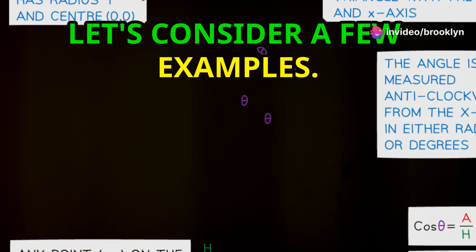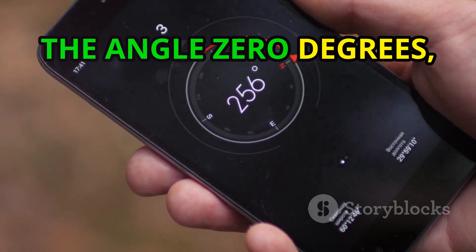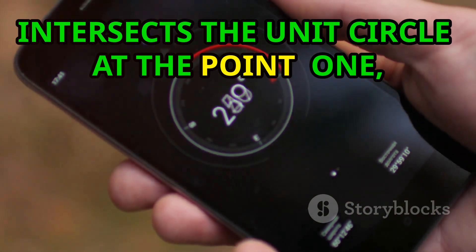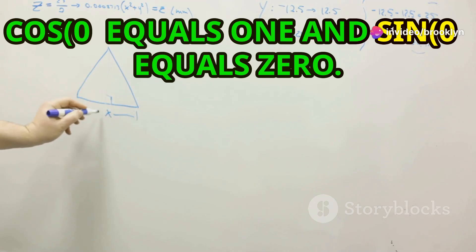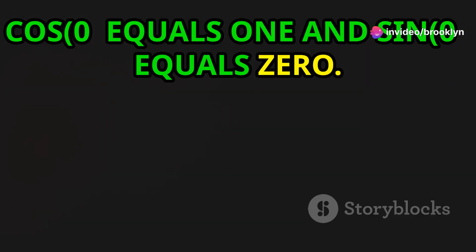Let's consider a few examples. The angle 0 degrees, or 0 radians, intersects the unit circle at the point (1, 0). Therefore, cos 0 equals 1 and sin 0 equals 0.